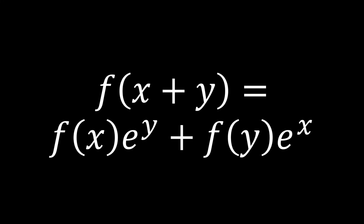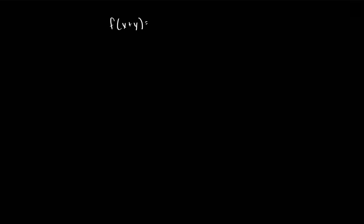Last week you were given the choice to vote between two functional equations, and this is the one that you voted for. In today's video, we are going to discover all the functions f that are differentiable at 0 and verify the equation f of x plus y is equal to f of x times e to the y plus f of y times e to the x.